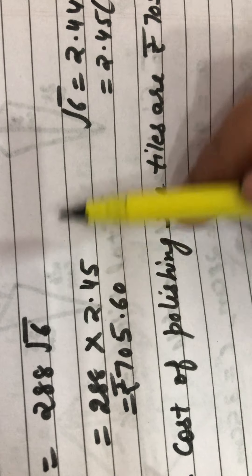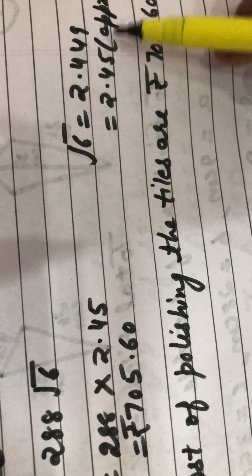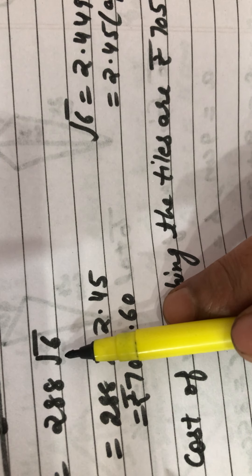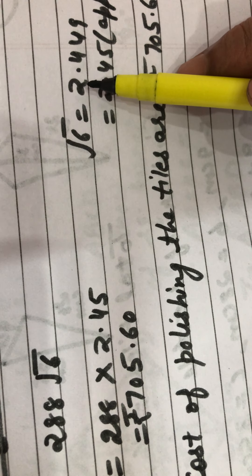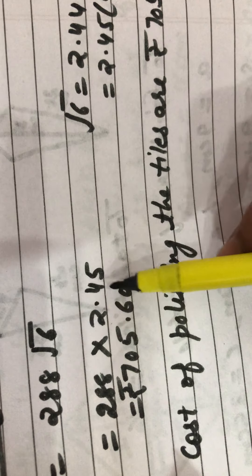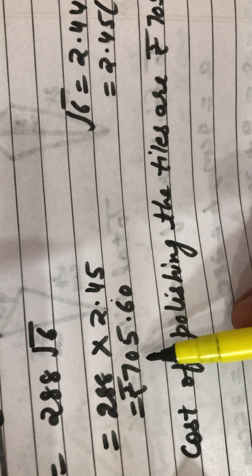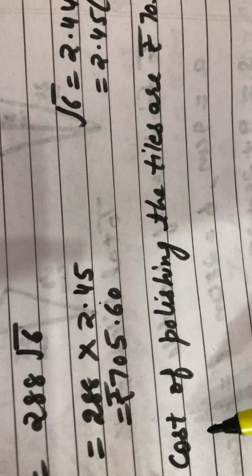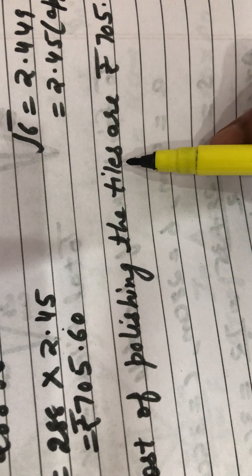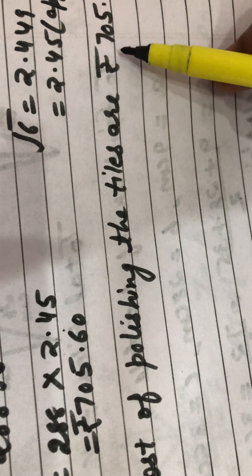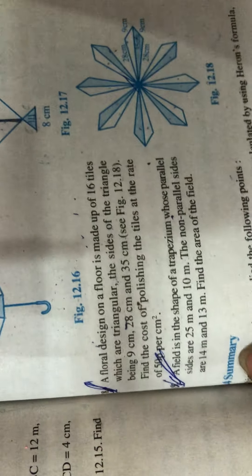The cost is 288√6 rupees. We know √6 ≈ 2.449, approximately 2.45. We must find the numerical value since we cannot keep the cost in root form. Putting the value of √6: 288 × 2.45 = 705.60. So the cost of polishing the 16 triangular tiles (the floral design) is 705 rupees 60 paise. This completes Exercise 12.2.